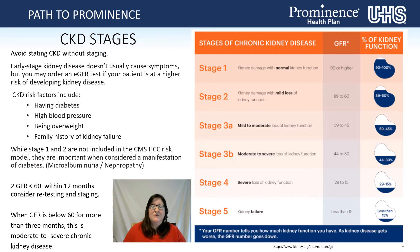When an eGFR is below 60 for more than three months, this is definitely considered moderate to severe kidney disease. You can see the percent of kidney function, the GFR value, and the stages of chronic kidney disease, specifically calling out new staging for stage 3: stage 3A — mild to moderate loss of kidney function with a GFR from 59 to 45; stage 3B — moderate to severe loss of kidney function with a GFR from 44 to 30; stage 4 is 29 to 15; stage 5 is less than 15.